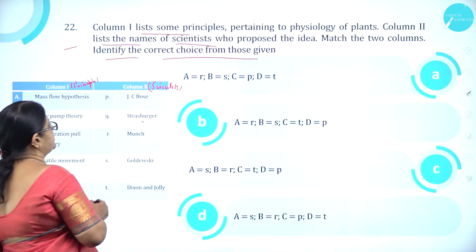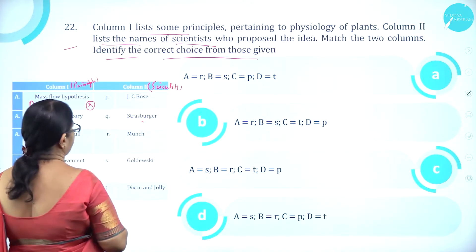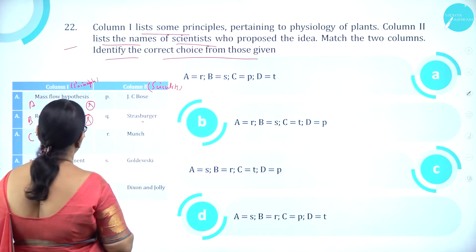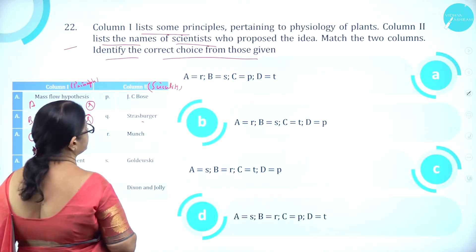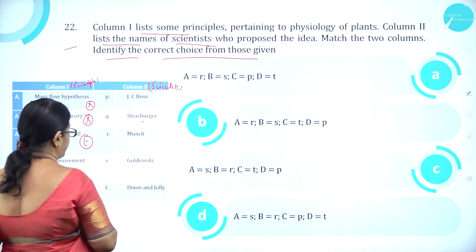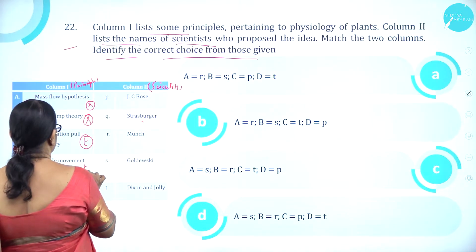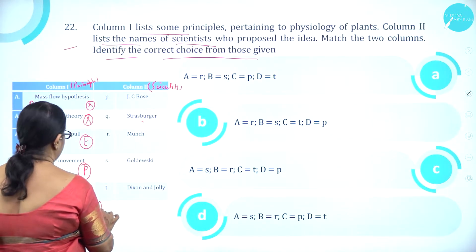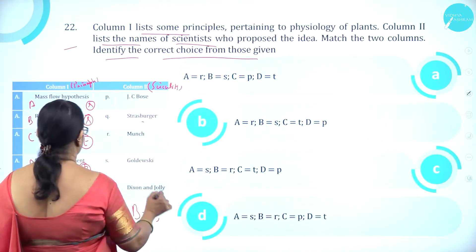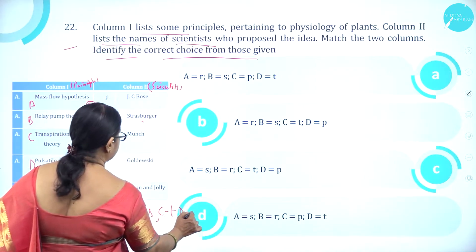Mass flow hypothesis is Munch's hypothesis, so A is R. Relay pump theory is Godel-Vesky, so B is S. Transpiration pull theory is Dixon and Jolly, so C is T. Pulsatile movement is J.C. Bose, so D is P.